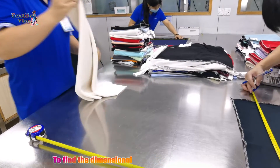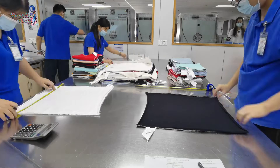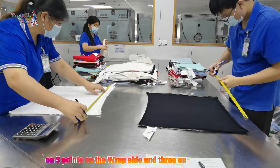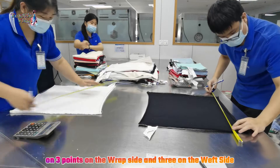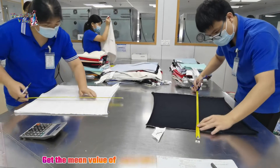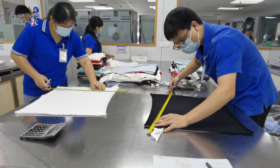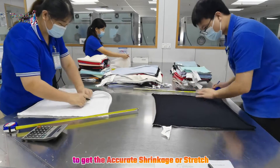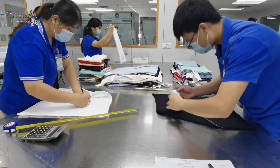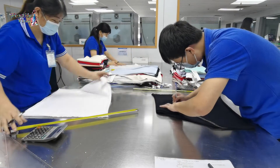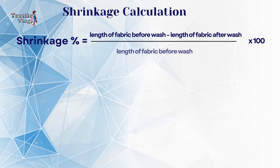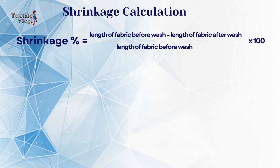To find the dimensional change, read the shrinkage on three points on the warp side and three on the weft side. Get the mean value of warp-wise and weft-wise readings to get the accurate shrinkage or stretch. Shrinkage percent can be calculated from this formula: length of fabric before wash minus length of fabric after wash, divided by length of fabric before wash, multiplied by 100.